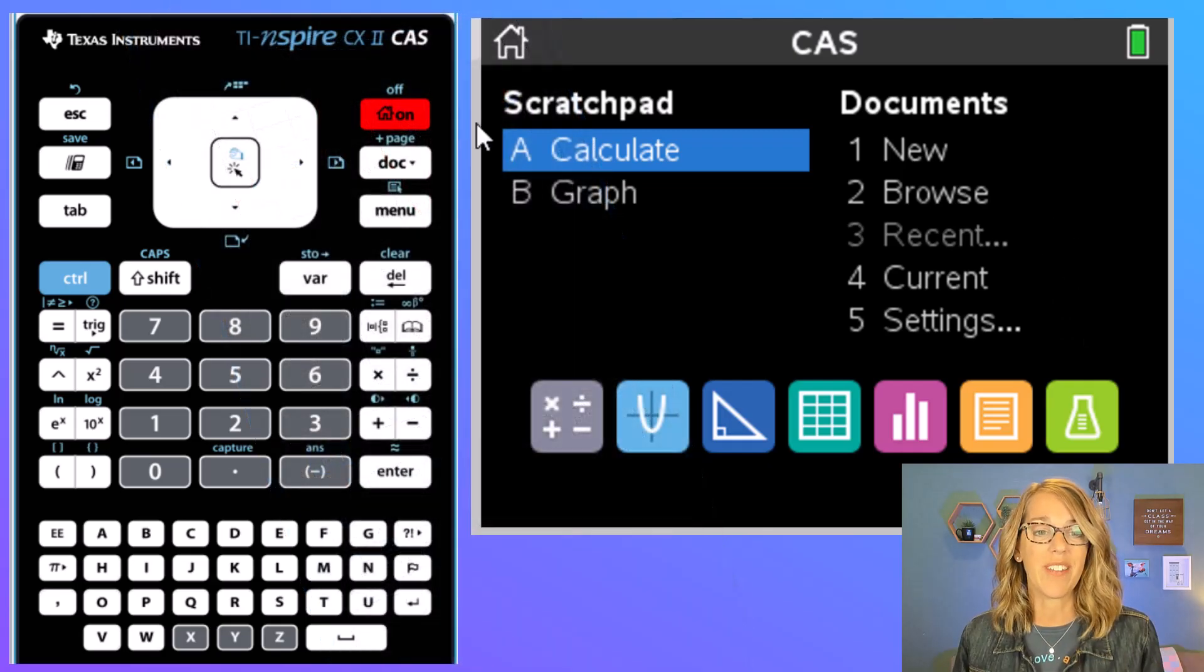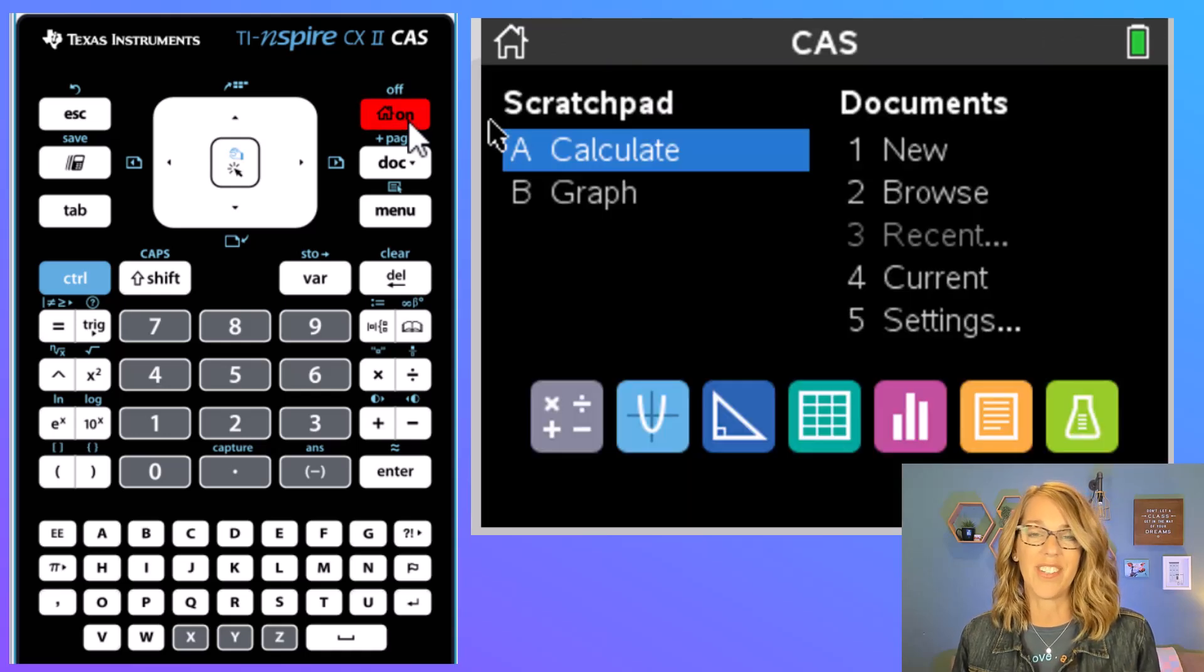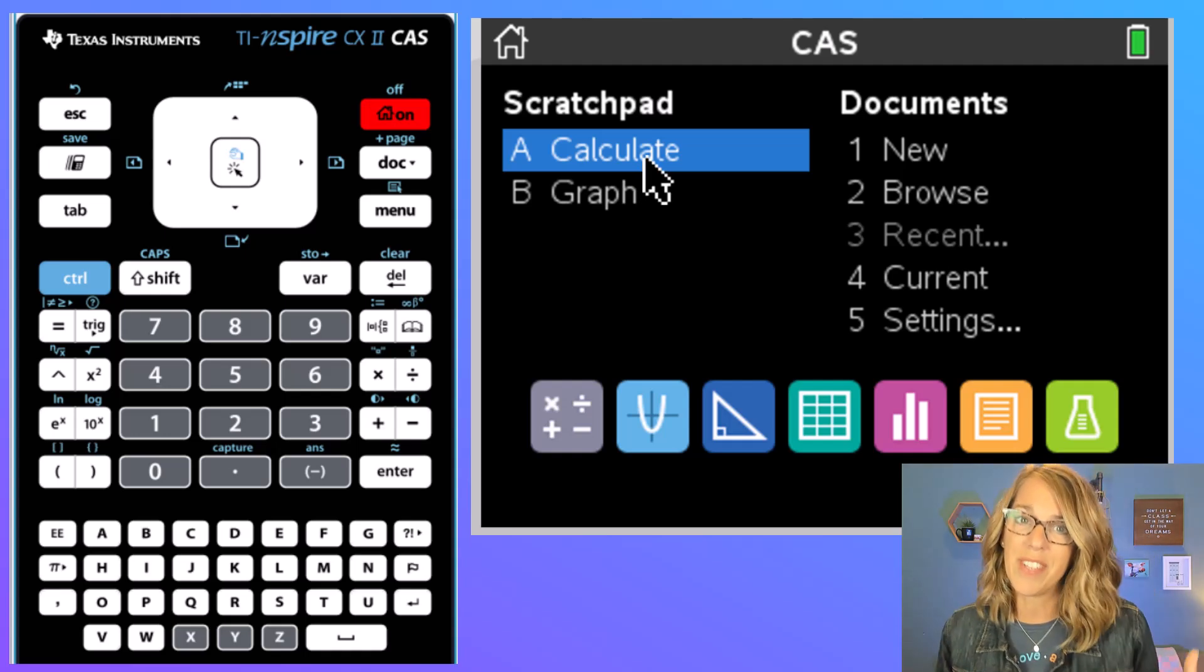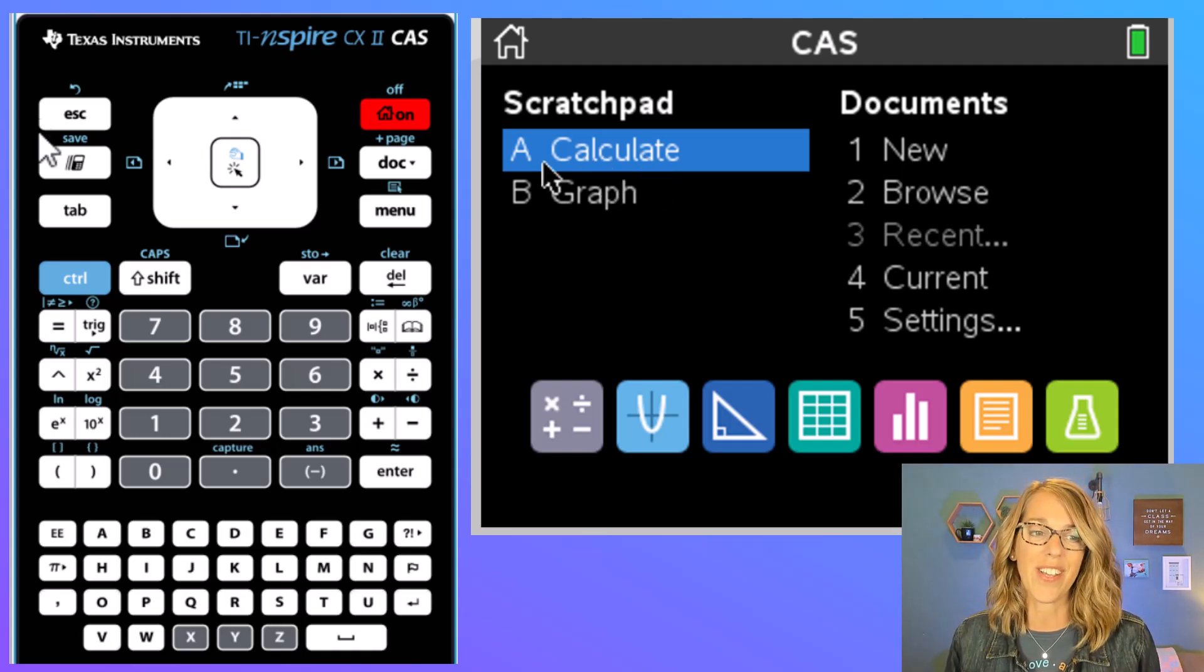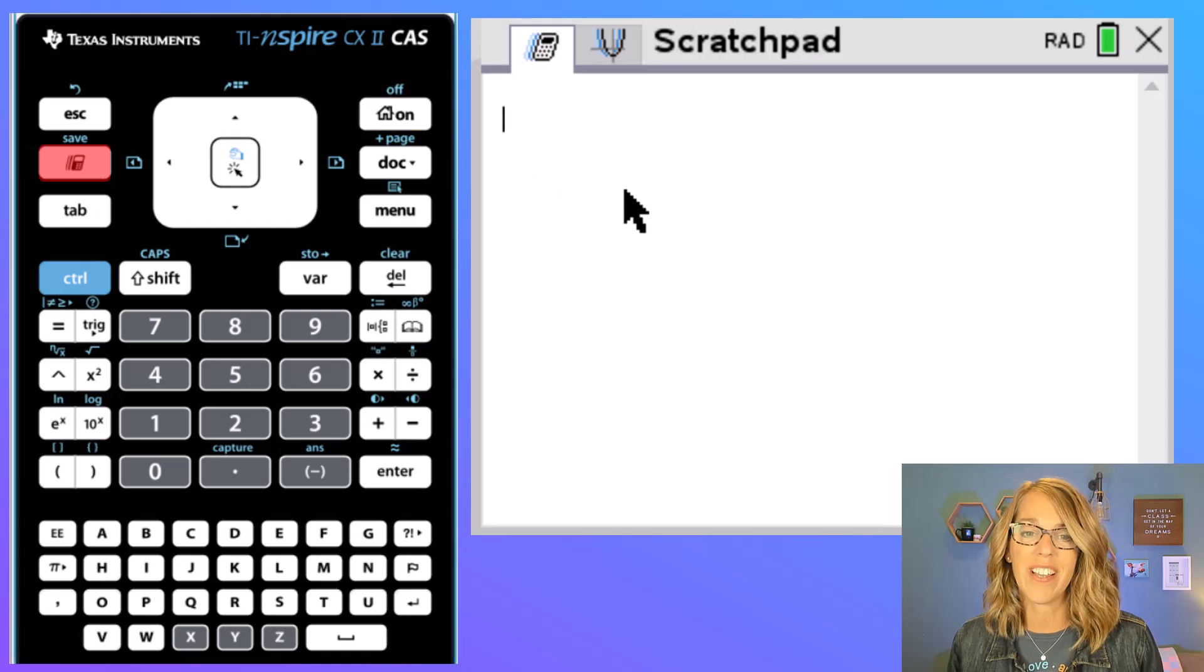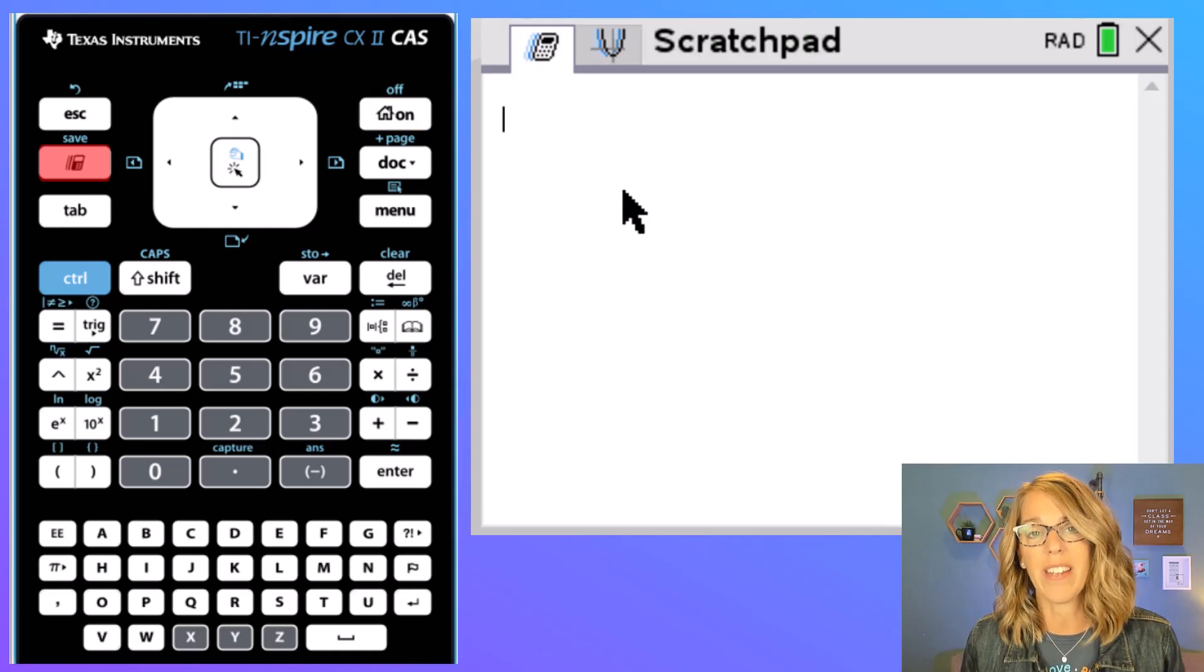I'm here at the home screen. If you're not at the home screen you can go ahead and click the on button to get to your home screen. We're going to go to the scratch pad. You can either hit the letter A or you can click this button over here to take you right to the scratch pad.